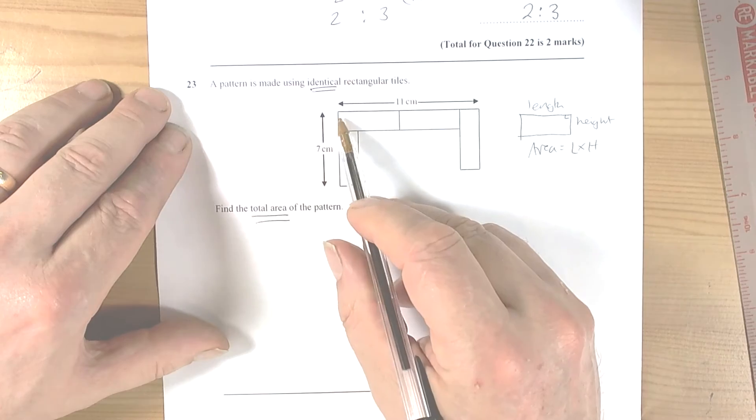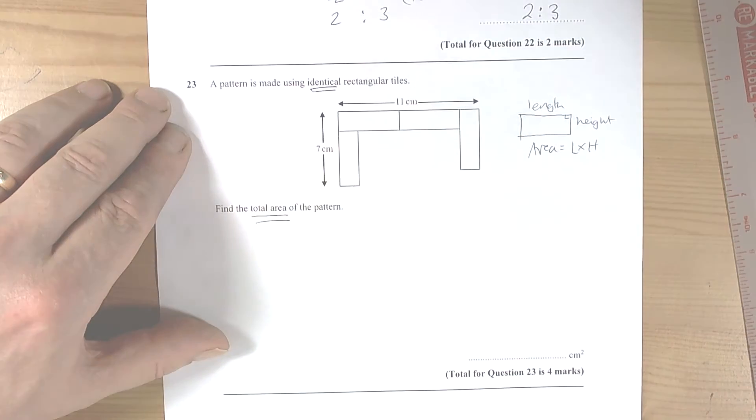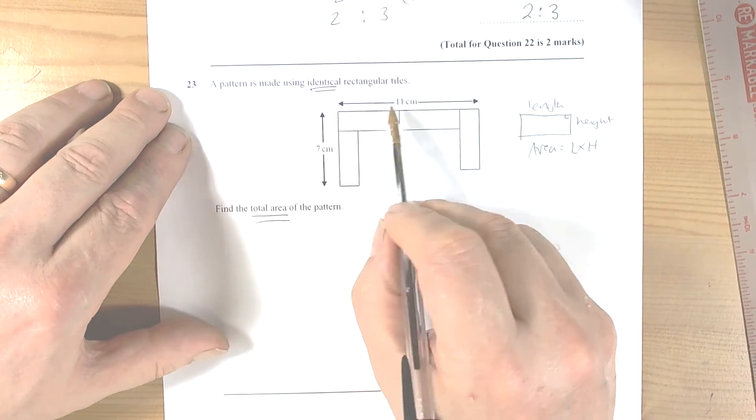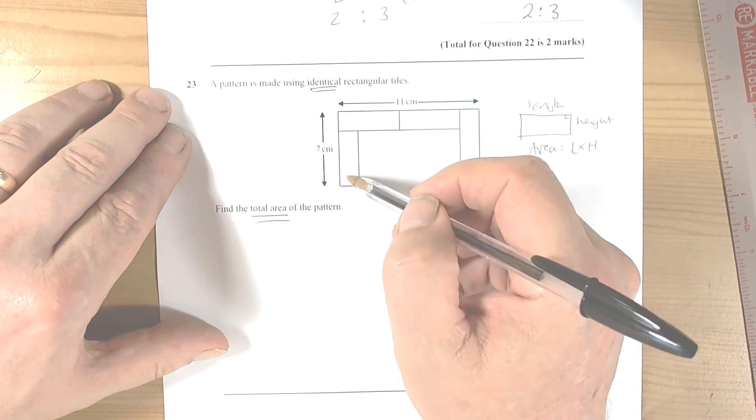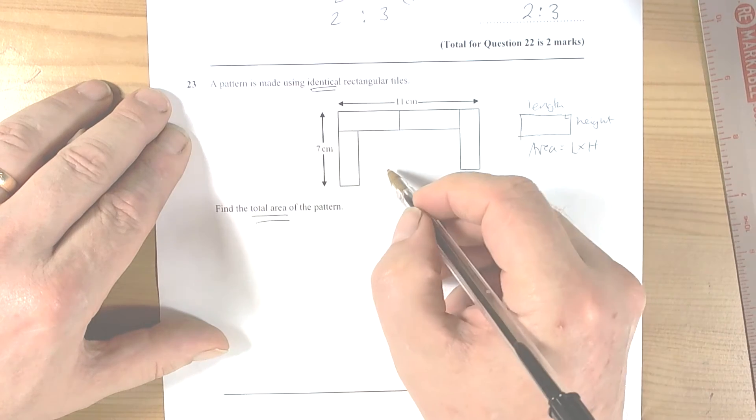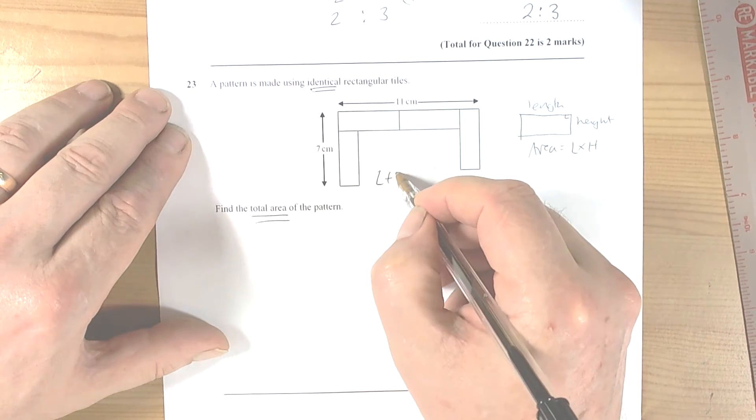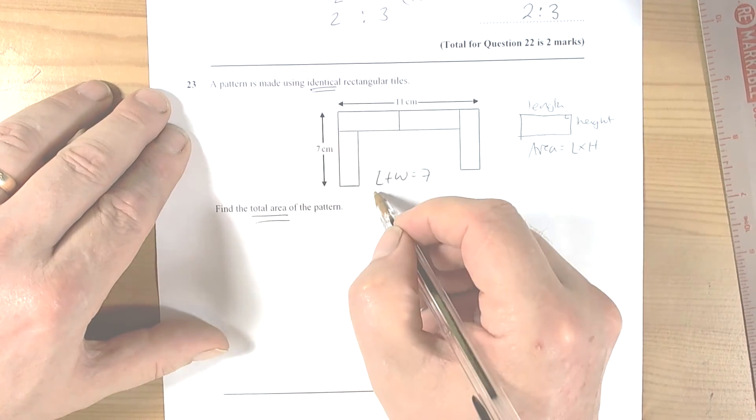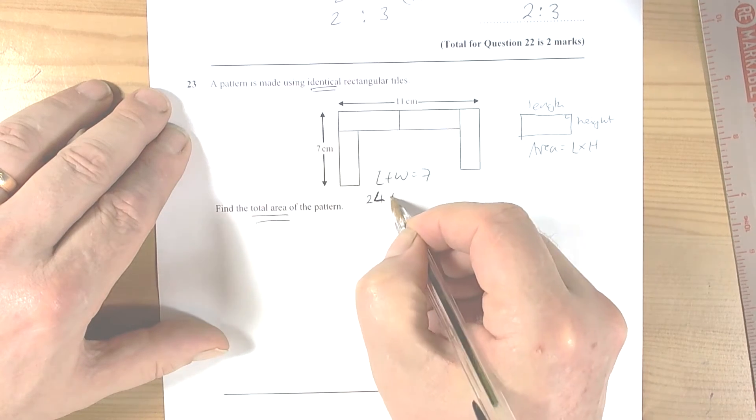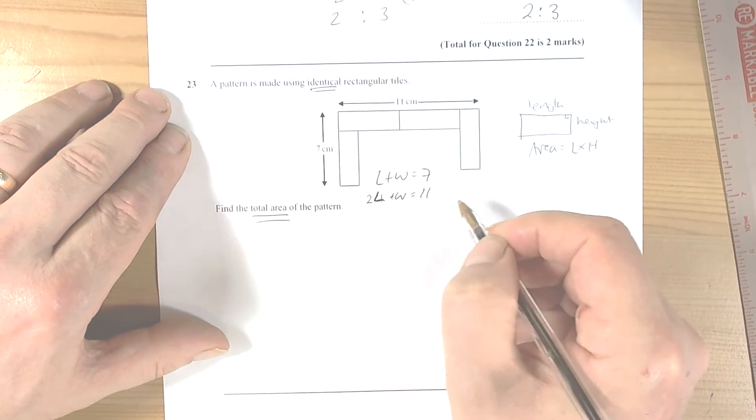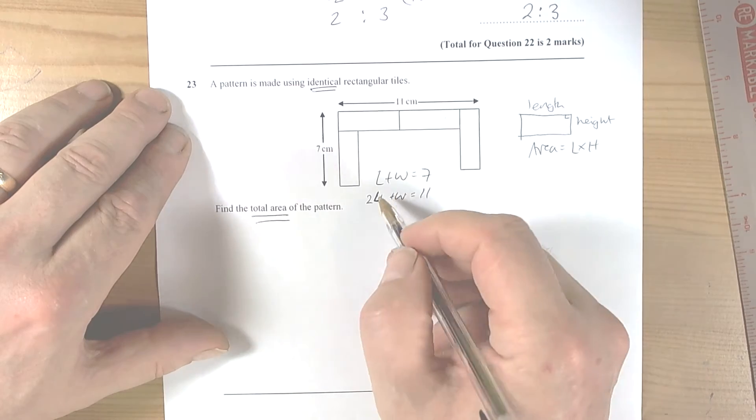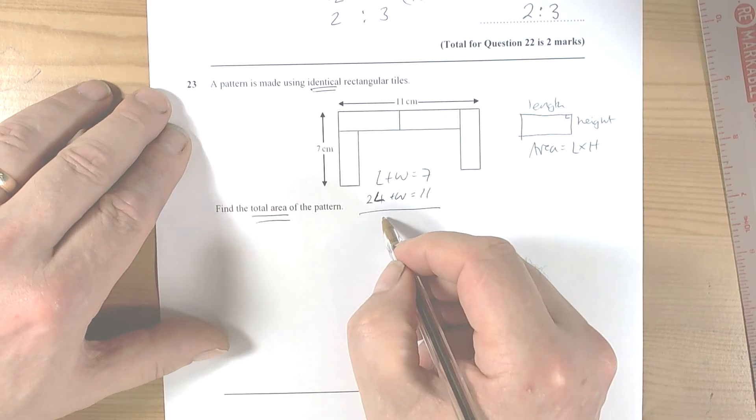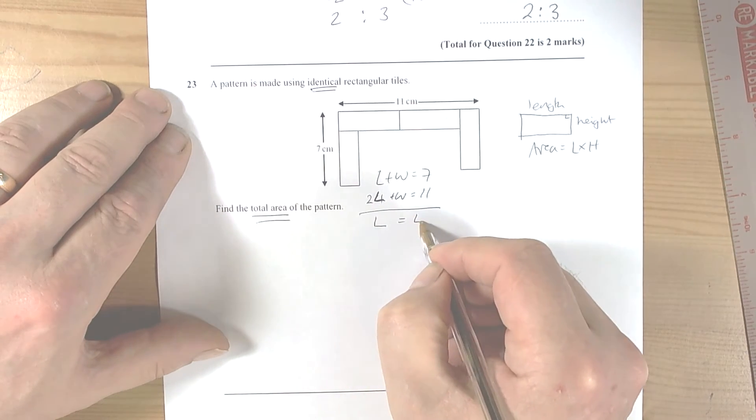So they're identical. Let's have a look what information have we got. So we know the length plus width equals seven, and we've got two lengths and a width, so two lengths and the width equals 11. So if we subtract those away from each other, then we end up with length is equal to 4.